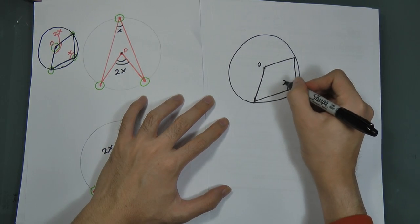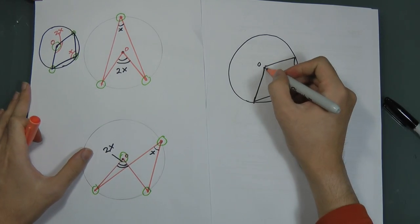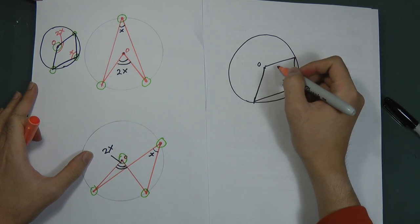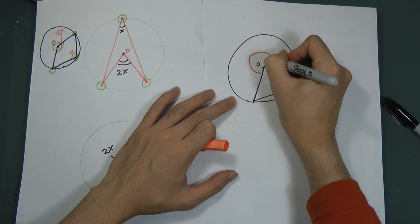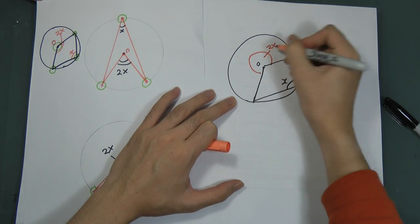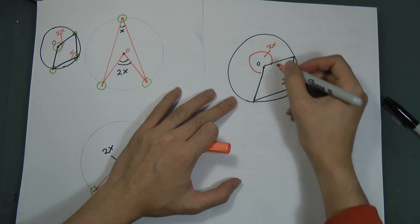because in the last video I said that this angle is 2x. This is wrong. Okay, if this is x, the 2x is actually over here. This is 2x. Okay, so if this one is 100, the 200 is over here.